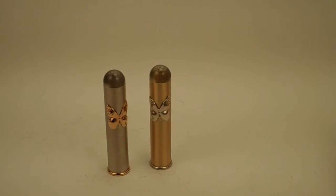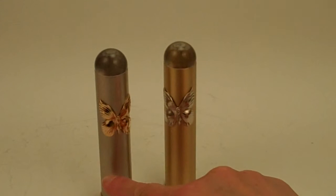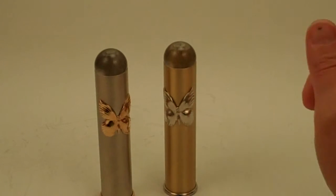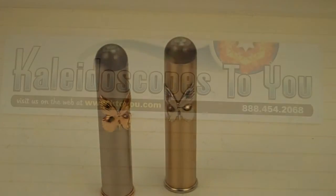Sometimes they are embellished with a sun or a dragonfly, but currently I have both the matte silver tone and the matte brass with the butterfly embellishment, and these are currently available at Kaleidoscopes2u.com.